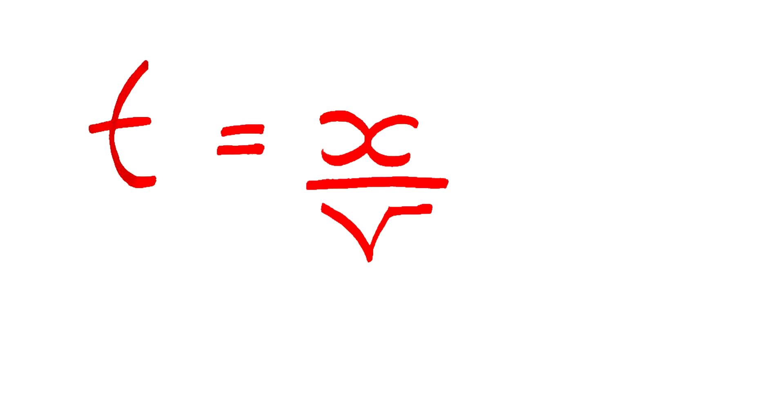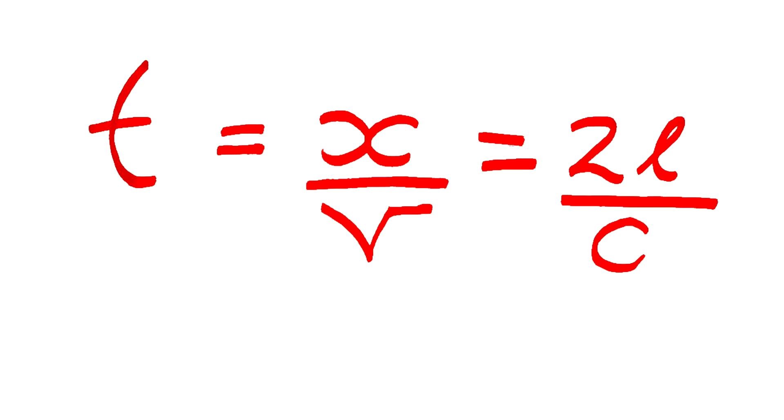The unit of time is the length of the rod twice — so two metres — divided by the speed of light: two over c. Now let's say that both you and I own identical models of this clock. We sit on a bench together, observe each other's clocks, and confirm that they keep exactly the same time — both clocks have exactly the same unit of time.